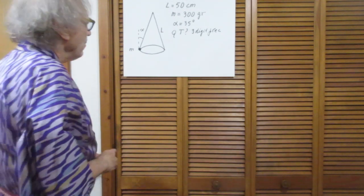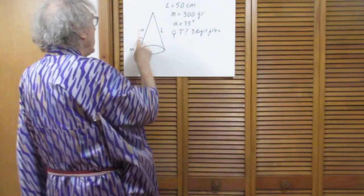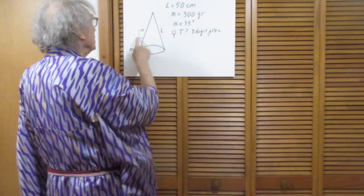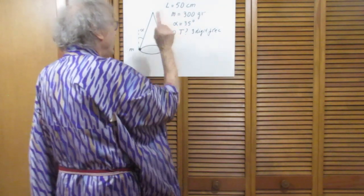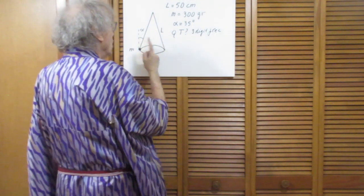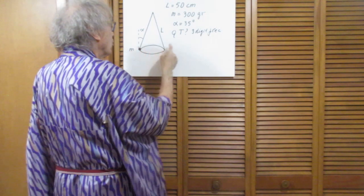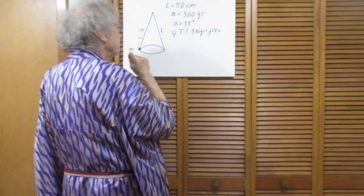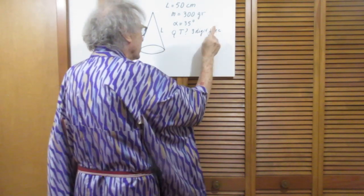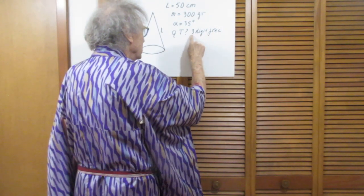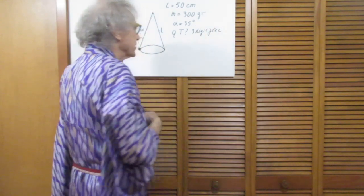I also weighed the mass of the bulb, very close to 300 grams. My question to you now is: if we make this angle 35 degrees, what is the period of the bulb to go around? We want the answer in seconds and I want three-digit precision.